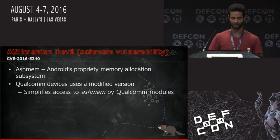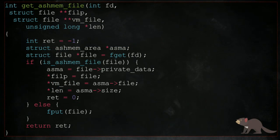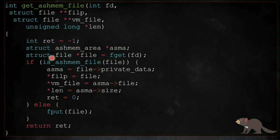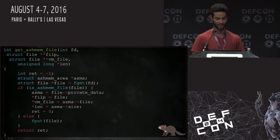Qualcomm added a function that gets a file descriptor and a few output pointers. It extracts from the file descriptor the internal kernel structure of the file, checks that this file is actually an Ashmem file, and if it is, it extracts data from the file. If it's not, the ref count is dropped back and the function is finished. It's kind of straightforward — and in fact, we couldn't find a vulnerability there.